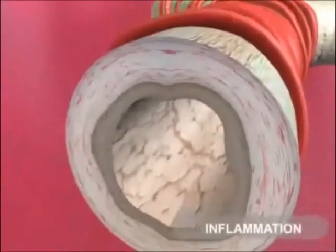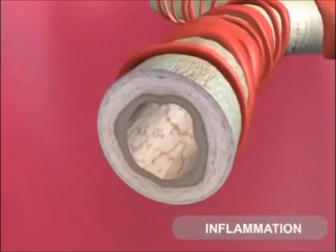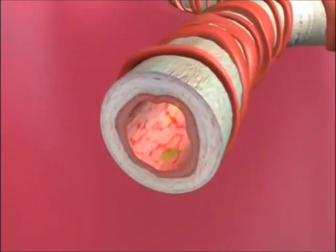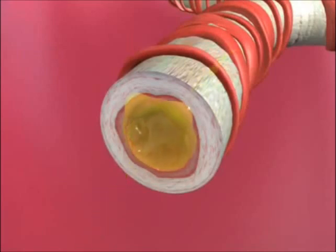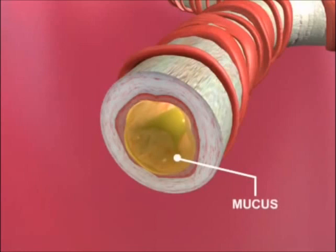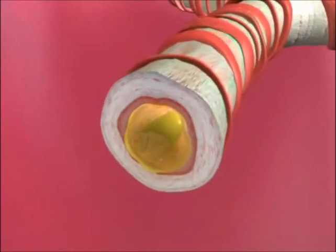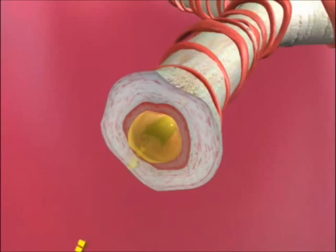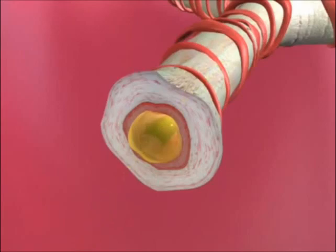Asthma is a disorder of obstruction to breathing due to inflammation and narrowing of the bronchial tubes. Initially, the bronchial tubes become inflamed and produce thick mucus. Later, the muscle surrounding these airways tightens, and air cannot move freely. This is called bronchospasm. The result is shortness of breath, and the air moving through the tightened airways causes a whistling sound known as wheezing.